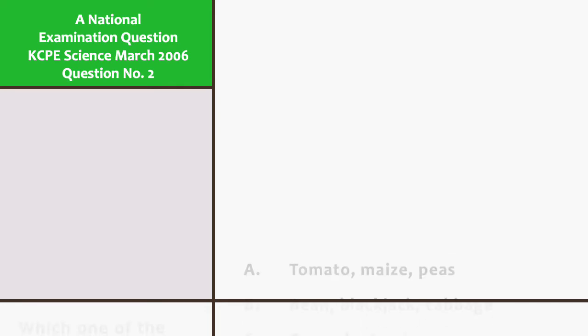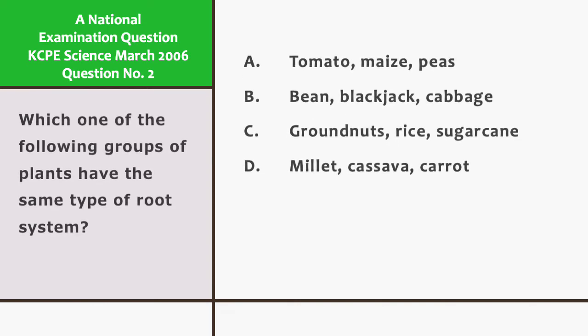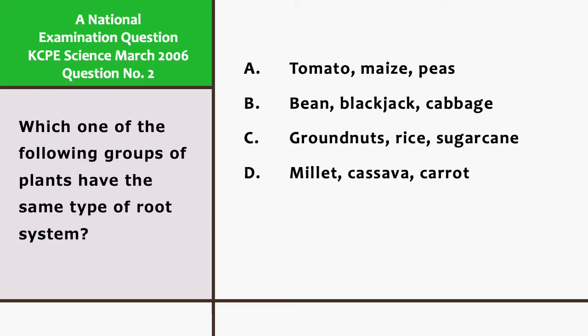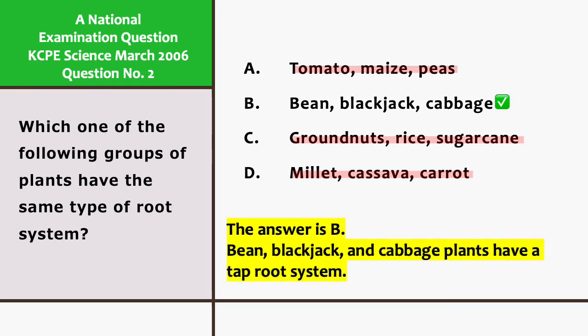Which one of the following groups of plants have the same type of root system? A. Tomato, maize, and peas. B. Bean, blackjack, and cabbage. C. Groundnuts, rice, and sugarcane. And D. Millet, cassava, and carrot.